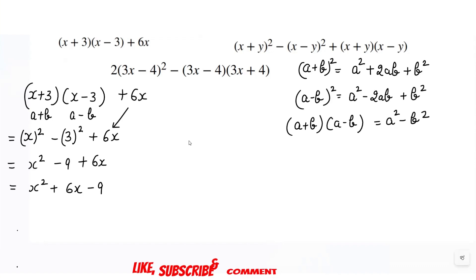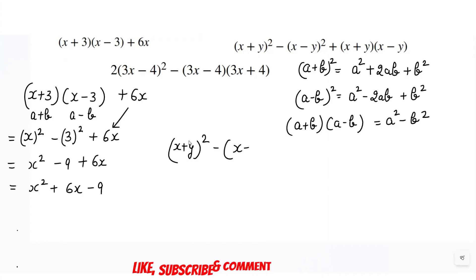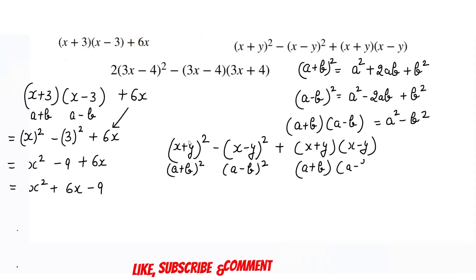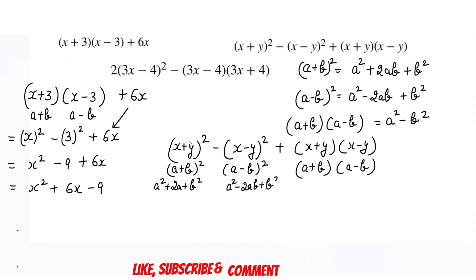Now the second question involves x plus y whole square, minus x plus y into x minus y, and related terms. The first part is in the form of a plus b whole square, the second part is a minus b whole square, and the third part is a plus b into a minus b. We use a squared plus 2ab plus b squared, a squared minus 2ab plus b squared, and a squared minus b squared respectively.